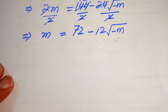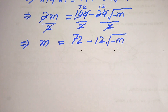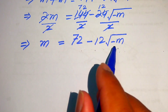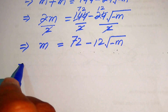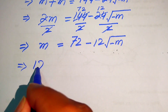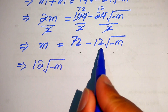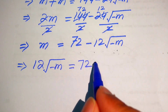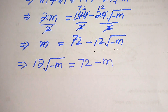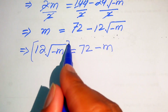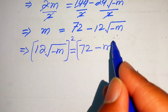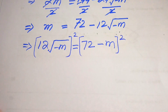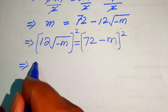In the next step we will again take the squaring on both sides, but first we move m to the right hand side and move 12 times square root of minus m to the left hand side. So we rewrite the equation as: 12 times square root of minus m equals to 72 minus m. Now we are ready to apply squaring on both sides to eliminate the square root sign.